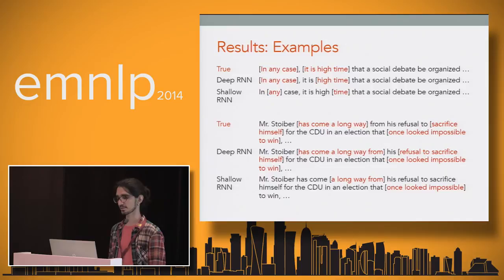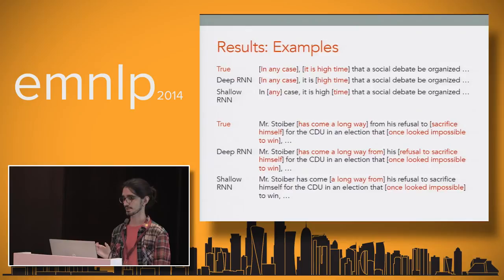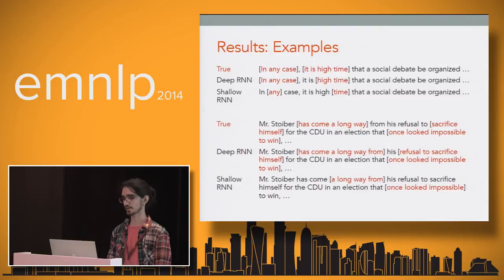The final set of examples compares deep RNNs to shallow RNNs directly. In the first example, both deep and shallow RNNs capture parts of the subjectivity, but deep RNN improves the phrase boundaries. In the second example, shallow RNN misses one of the opinion expressions entirely, while deep RNN captures both and also improves the phrase boundaries of the other.